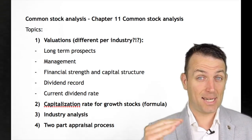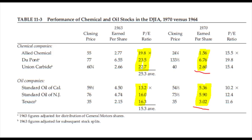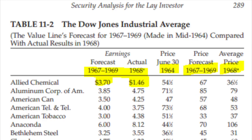Graham gives a great example from his table in the book, showing how the earnings forecast for Allied Chemicals was 3.70, but the actual average was 1.46 — much worse than expected. Those averages go all around the place, especially in the modern era. So always take with a grain of salt any analysis that gives you a target price, because you never know what can happen.